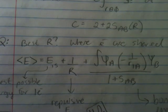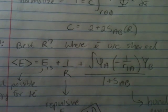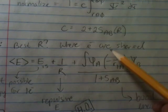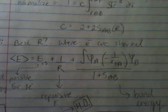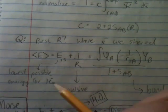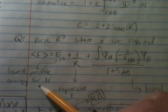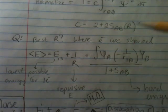You might be asking, what is the best R to have, right? The best distance to have is where the electrons are shared, and shared the most. So, it's the lowest possible energy. So, what you want to do is find the expectation value of the energy.